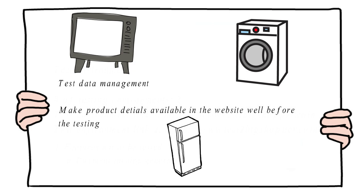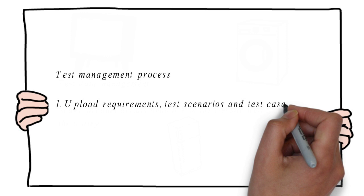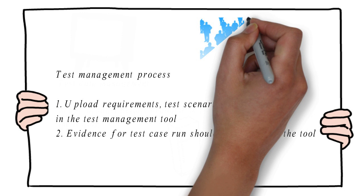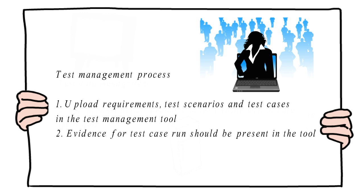The next component is test management process. Here, the details about the test management process would be defined. For getting clarity about test case coverage, the requirements and test cases need to be uploaded in the test management tool and linked properly. For knowing the testing progress, status should be sent to the customer on a daily basis and calls should be scheduled. Also, evidence for the test case run needs to be shared with the client so they can review and approve it.